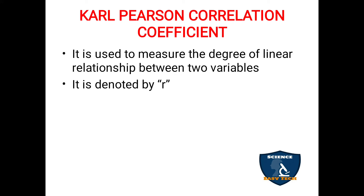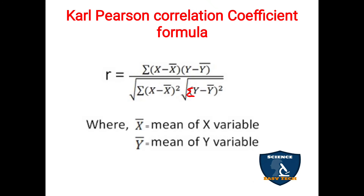Karl Pearson Correlation Coefficient is used to measure the degree of linear relationship between two variables — you are finding the relationship or correlation between two variables. It is denoted by small letter R. The formula as given by Karl Pearson for calculating correlation: R = Σ(x − x̄)(y − ȳ) divided by the square root of Σ(x − x̄)² into the square root of Σ(y − ȳ)². This is essentially the standard deviation of x and standard deviation of y formula.